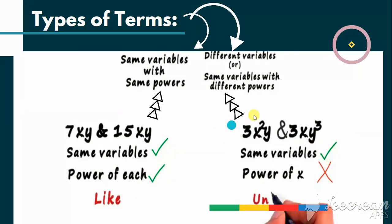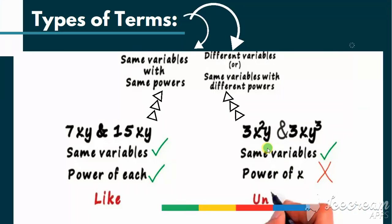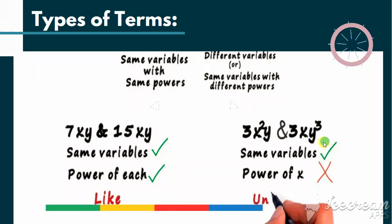Look at these terms. They have the same variables x and y but the powers are different. Here, the power of x is 2 and here the power of x is 1. Similarly, here the power of y is 1 and here the power of y is 3. So these are called the unlike terms.